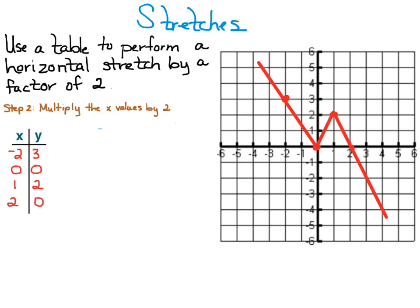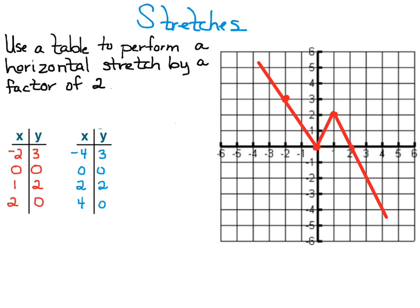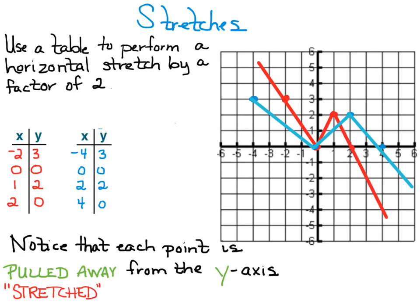Next, I want to multiply the x values by two. Let's make sure we understand the connection here — it's a horizontal stretch, horizontal line, x-axis, and the value that gets multiplied by two is the x value. My new table of values will be the following, and when I graph them you can see the resulting image. Notice that each point is pulled away from the y-axis — it's stretched.